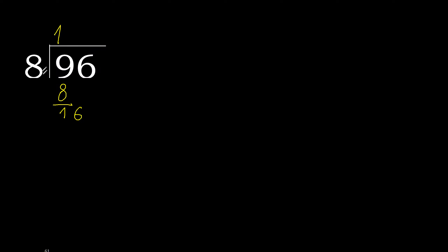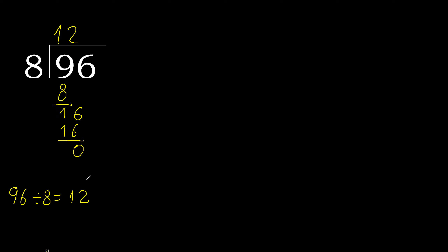Next, 16. 8 multiplied by 2 is 16. 16 is not greater. 16 minus 16 is 0. Since there is no next number, therefore finish. 96 divided by 8 is 12.